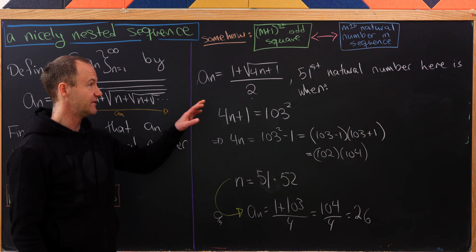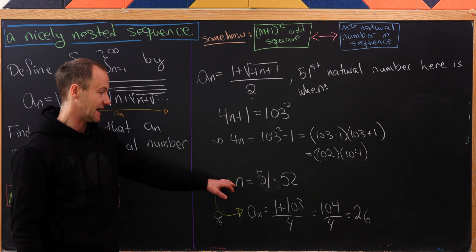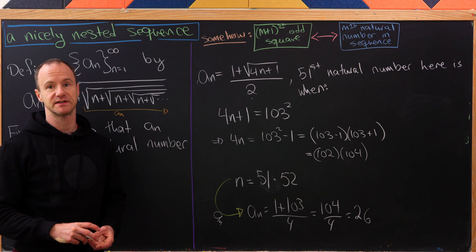So there we have it. The 51st natural number in this sequence is equal to 26 and it occurs when n equals 51 times 52. And that's a good place to stop.